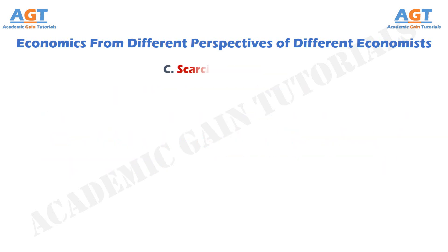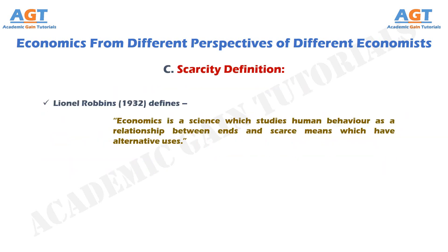C. The Scarcity Definition. Lionel Robbins, in 1932, defines economics as a science which studies human behavior as a relationship between ends and scarce means which have alternative uses.